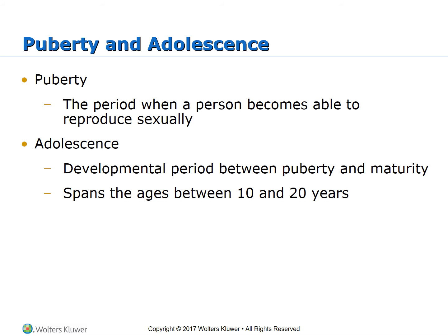Puberty is a period when a person becomes able to reproduce sexually. This is on page 121. Adolescence is a developmental period between puberty and maturity that can be divided into distinct stages. Generally, it spans between the ages of 10 and 20 years.